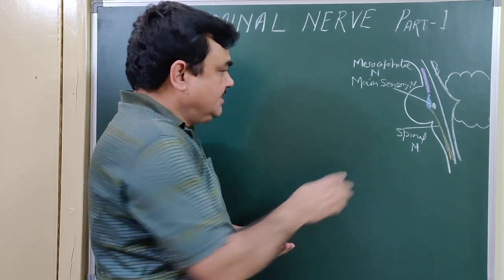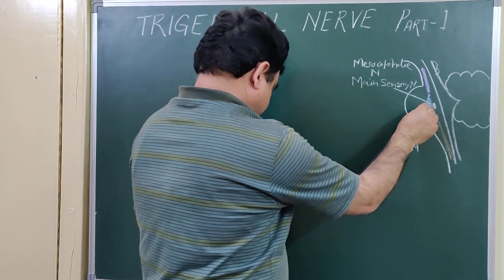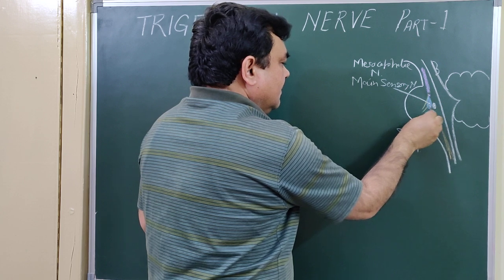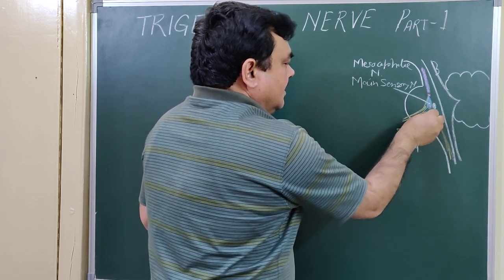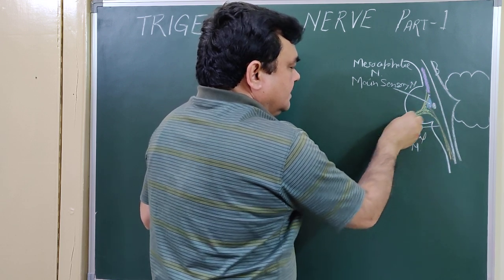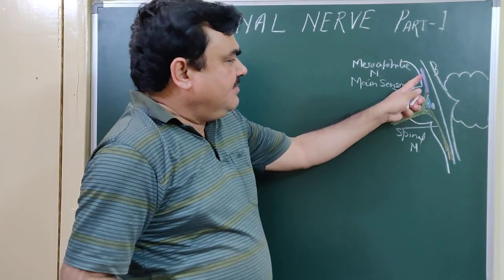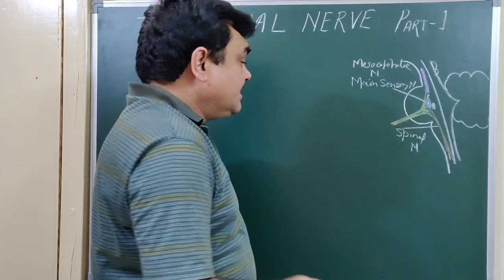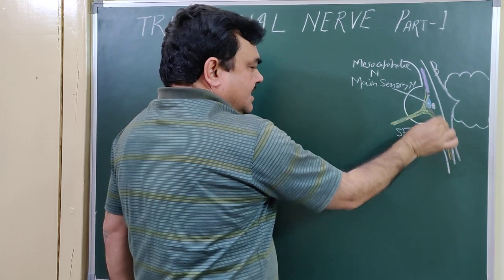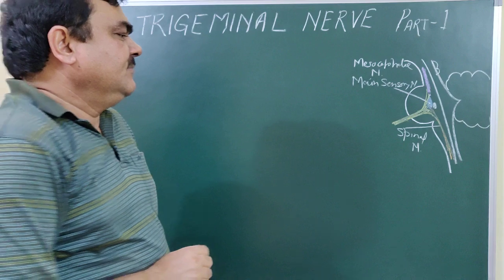After arising from the pons, this is the sensory root, which arises from the mesencephalic, main sensory, and spinal nuclei of the Trigeminal. The mesencephalic nucleus is for proprioception, the main sensory nucleus is for two-point discrimination, and the spinal nucleus is for touch, pain, and temperature.